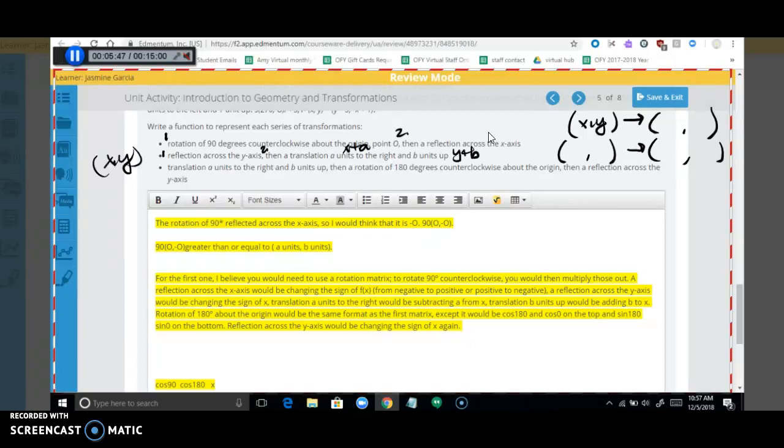And now for here, there's three things. You're going to translate. You're going to start with XY. You're going to translate it A right, B up. Then once you get that answer, then you're going to rotate that whole thing 180 degrees clockwise. Then you're going to take that answer and reflect the whole thing across the Y axis.